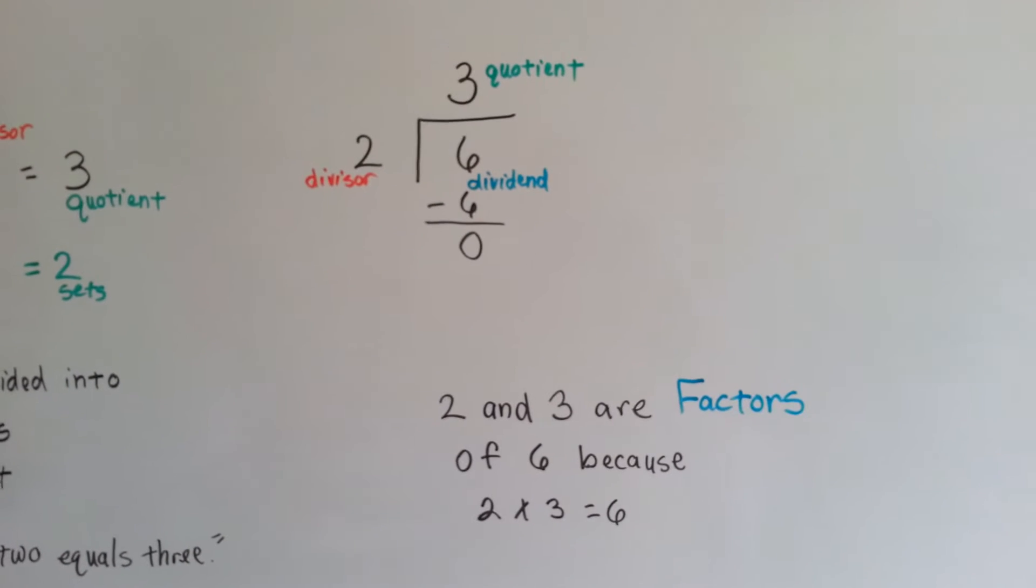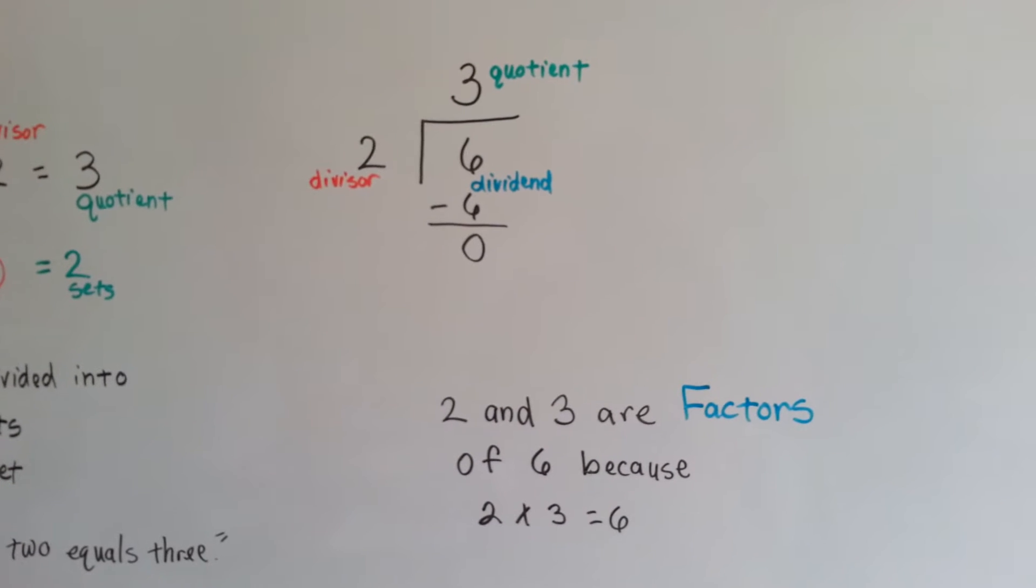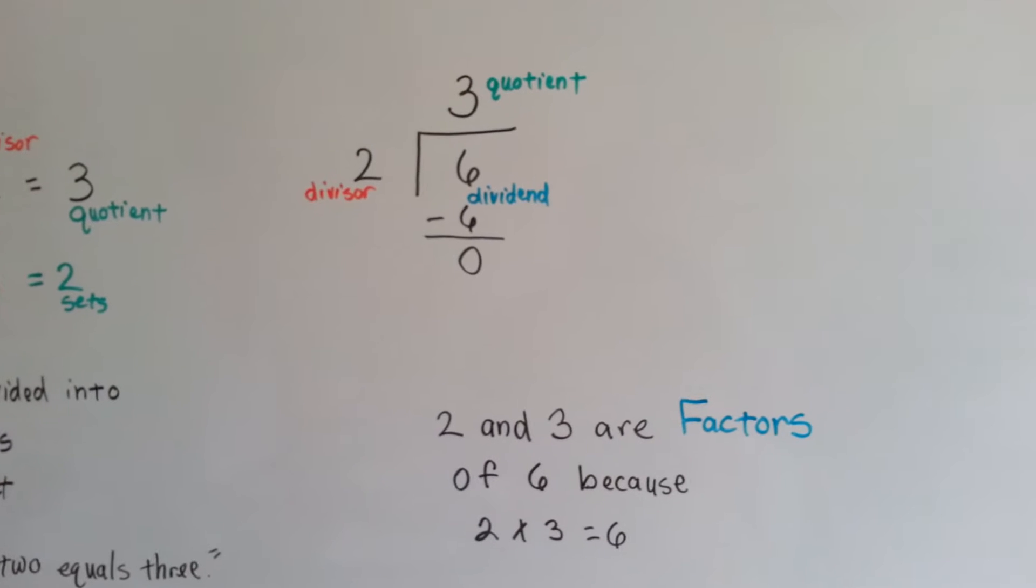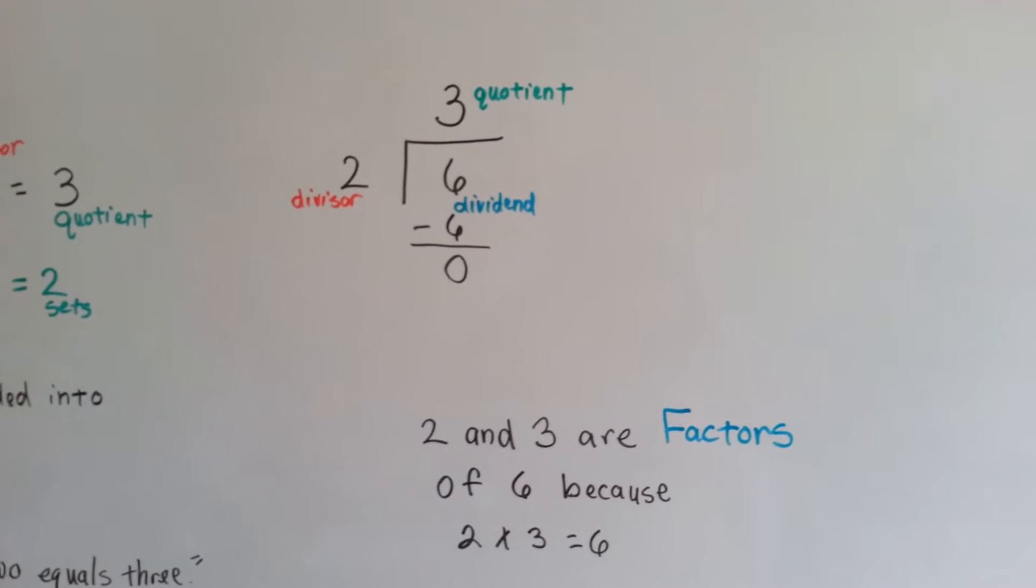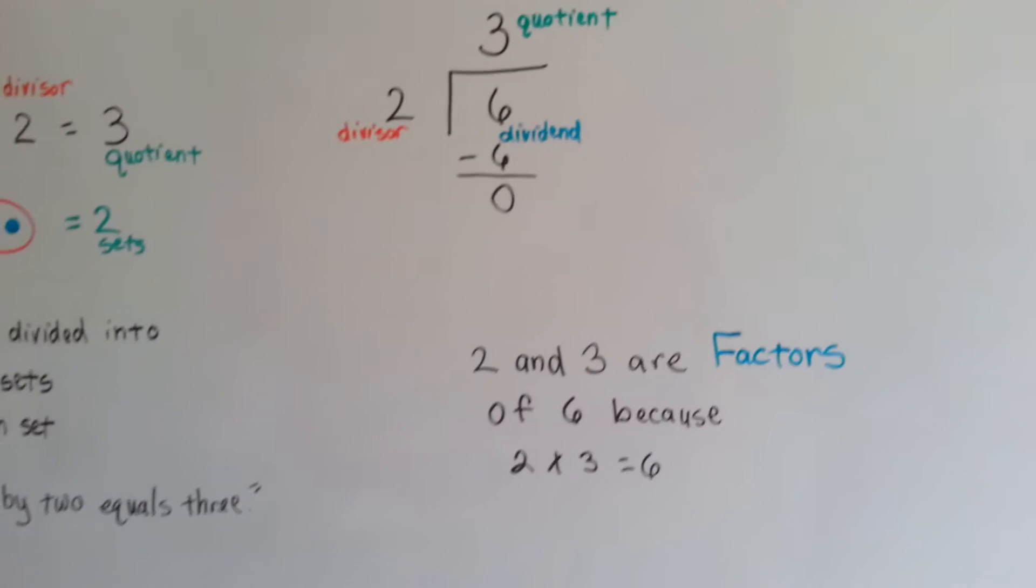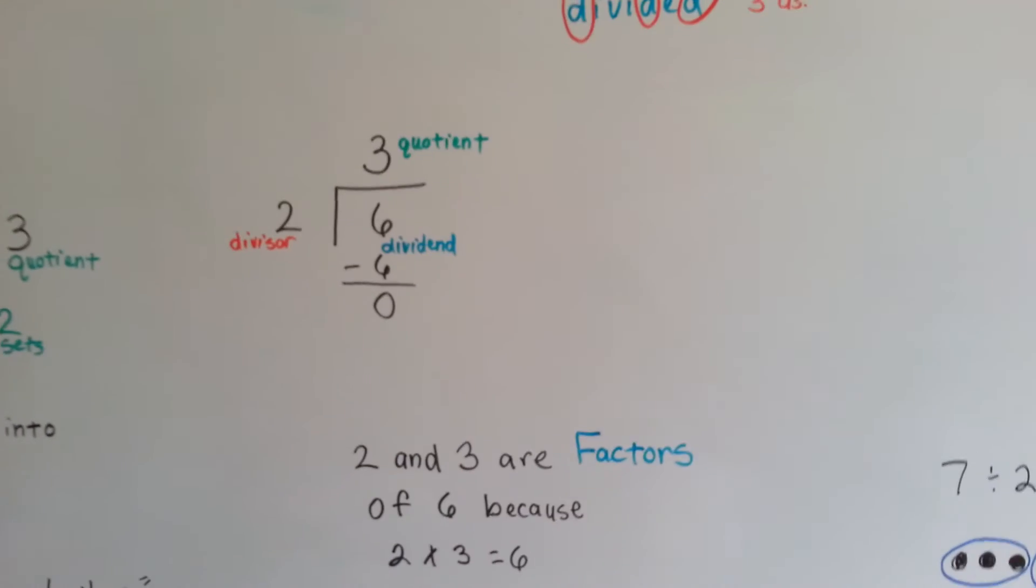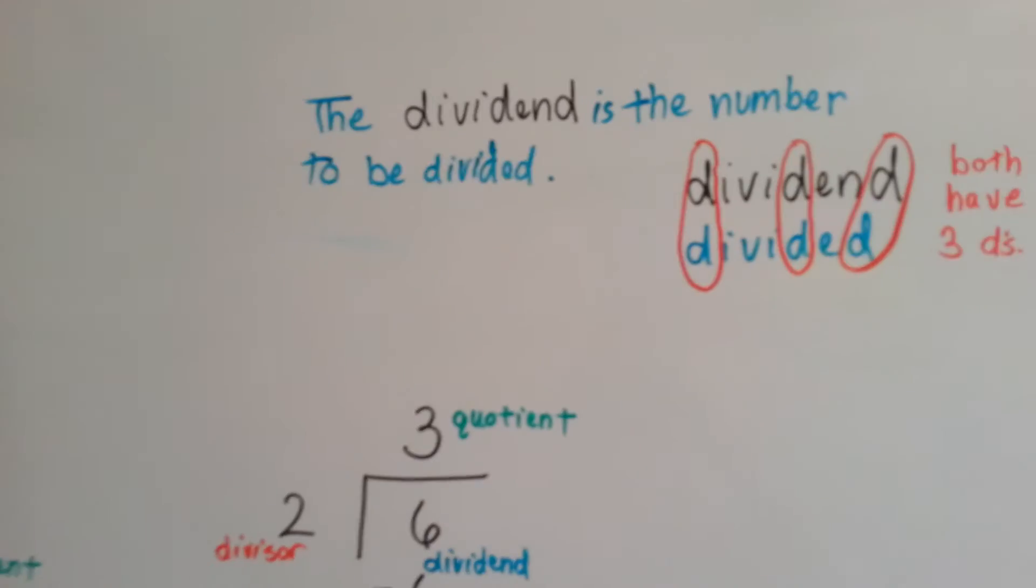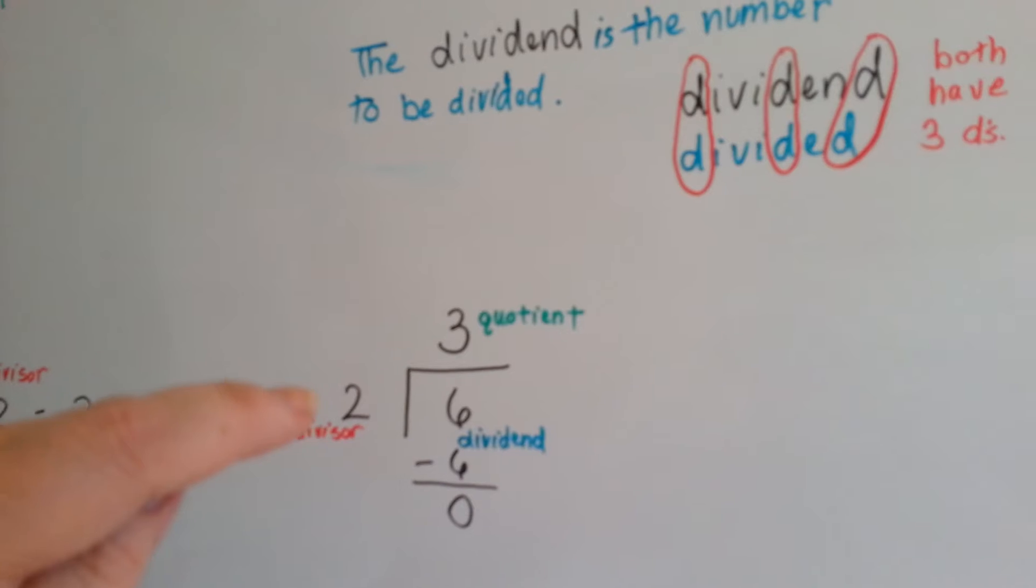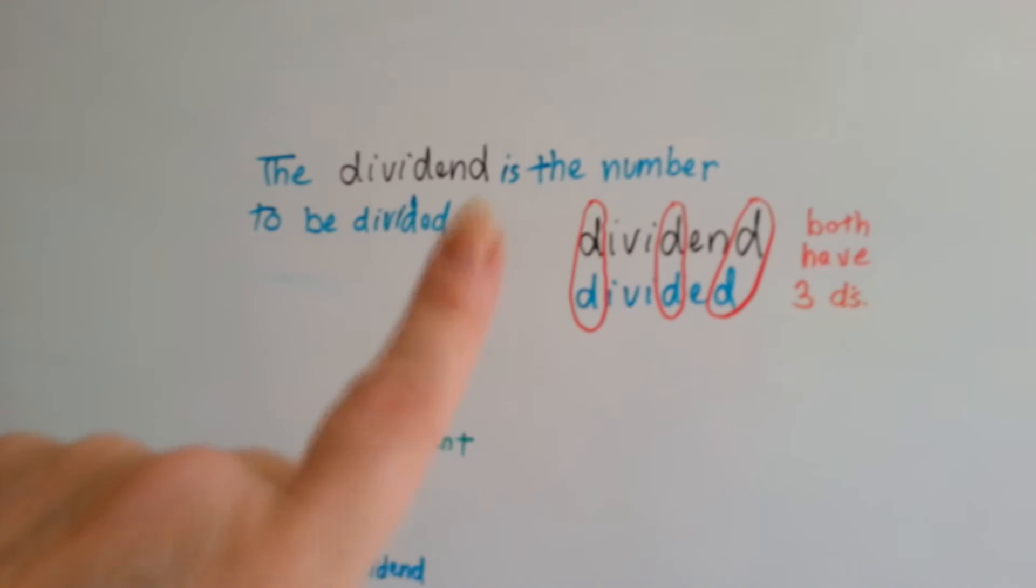So, two and three are factors of six, because two times three equals six. And that's an important thing to remember, that two and three are factors. If you want to remember which is the divisor, the dividend, and the quotient, it's very easy.